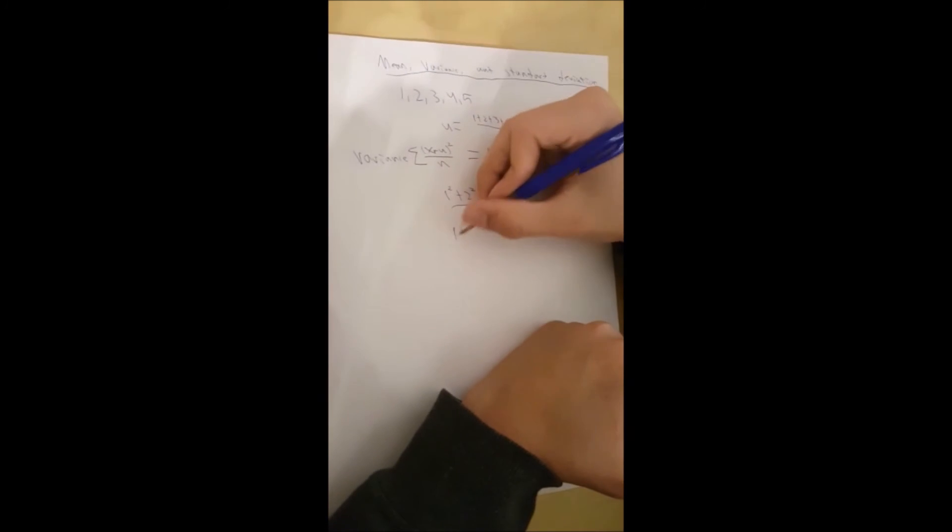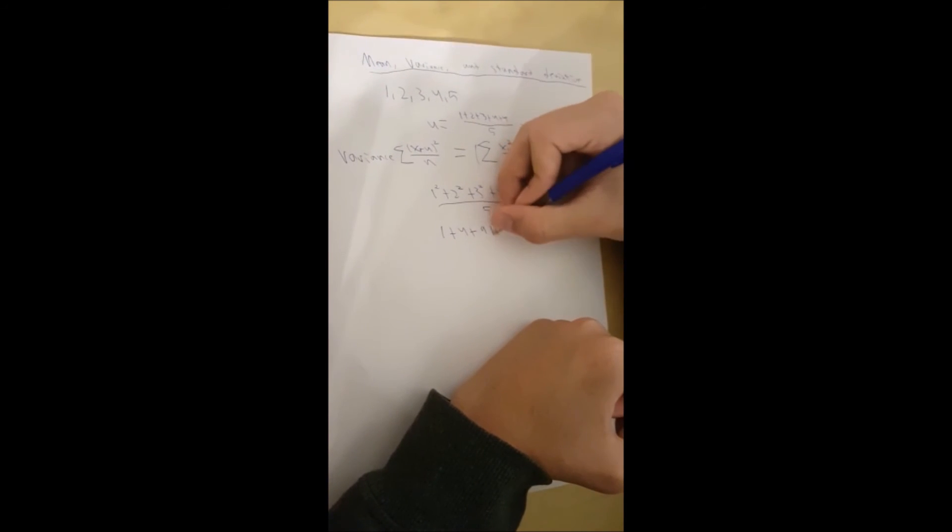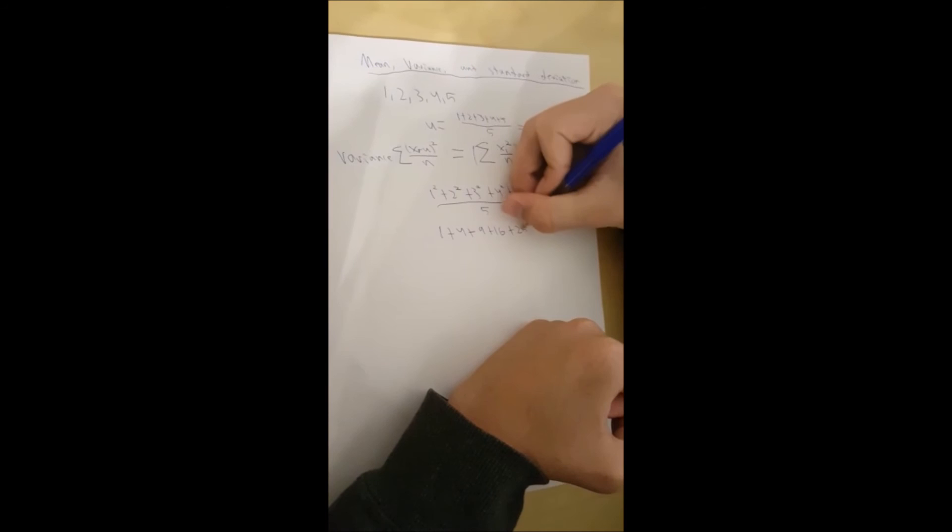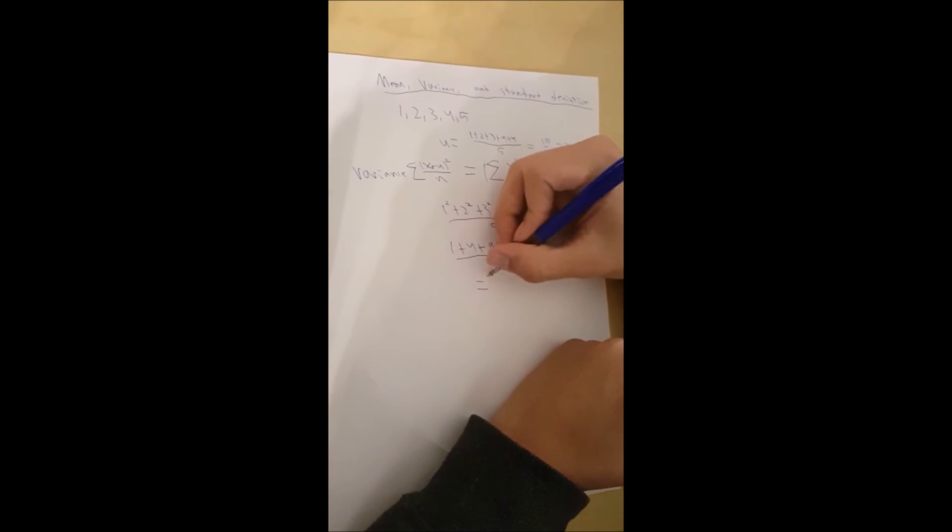And that's equal to 1 plus 4 plus 9 plus 16 plus 25 over 5, minus 9, and that is equal to 2.